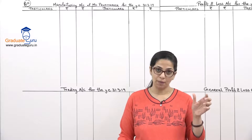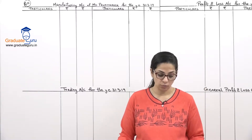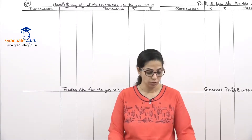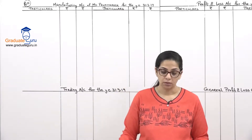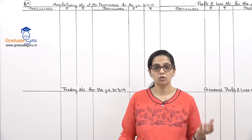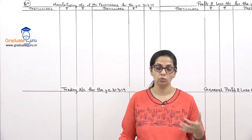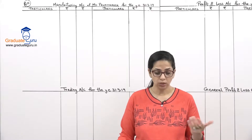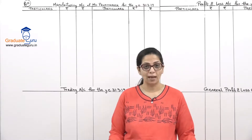Administration expenses - also one amount given. Selling and distribution - same way, one amount given. Sundry receivables, which is nothing but debtors. Debtors and bills receivable combined are called sundry receivables. It will go to the balance sheet.